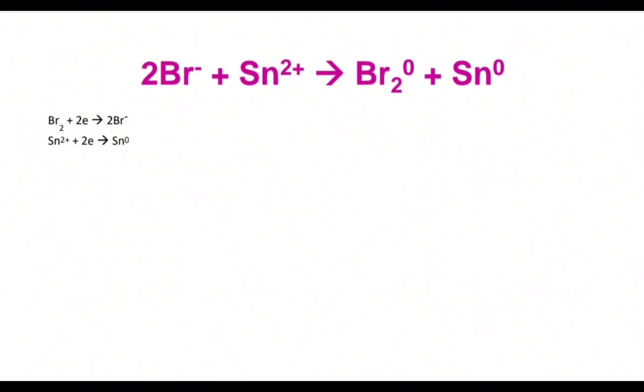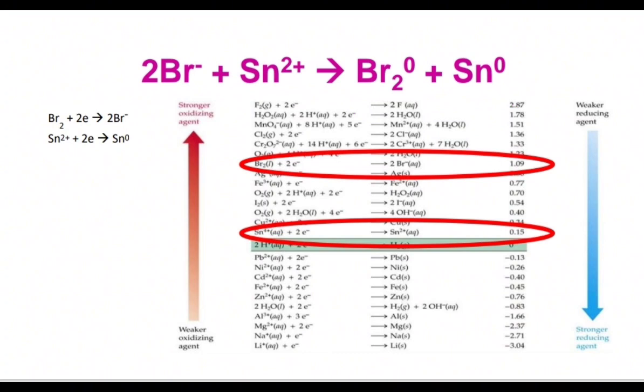Then what we do: we need to find their cell potentials. Let's see. We are back to this table as I showed you at the beginning of the video. We see that for bromine the cell potential is 1.09.